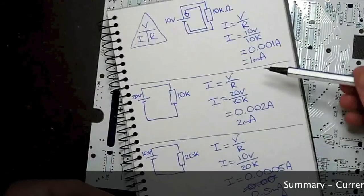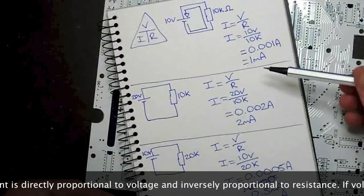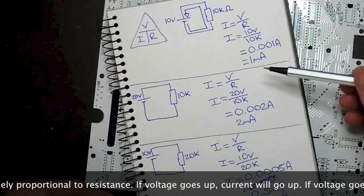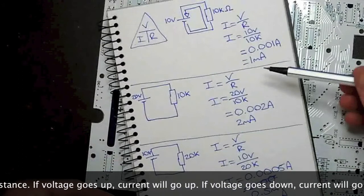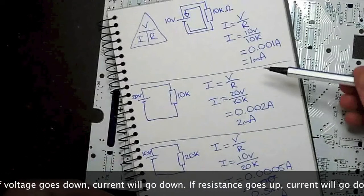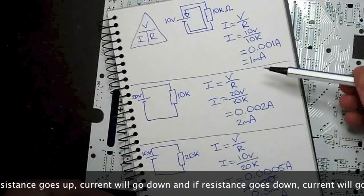So to summarize, current is directly proportional to voltage. It is inversely proportional to resistance. If voltage goes up, current will go up. If voltage goes down, current will go down. If resistance goes up, current will go down. And finally, if resistance goes down, current will go up.